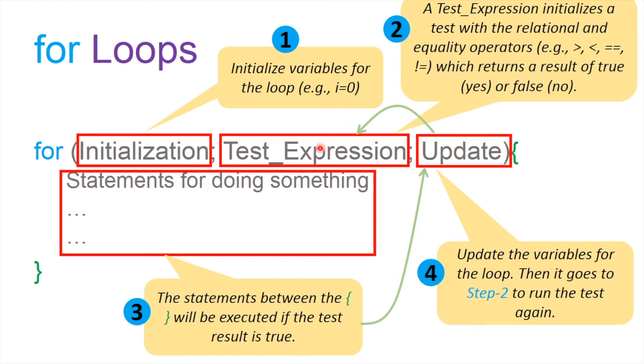Then after the updating, it will go into the test. And if the test passed, do the body part and go back to updating and test. Remember that the initialization part session will be executed once at the very beginning of the for loop, and for the rest of the execution, they will just ignore this.